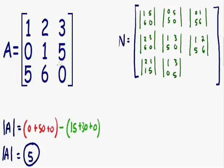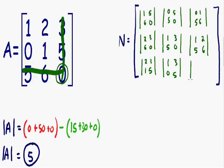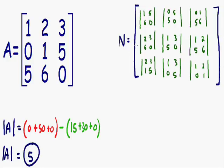Finally, for the number in the bottom right position, 0: cross out its column and row and we're left with the 2 by 2 matrix 1, 2, 0, 1. Place that in the bottom right position. And now we have filled our new 3 by 3 matrix N with a bunch of smaller 2 by 2 matrices. So now we can move on to the next step.